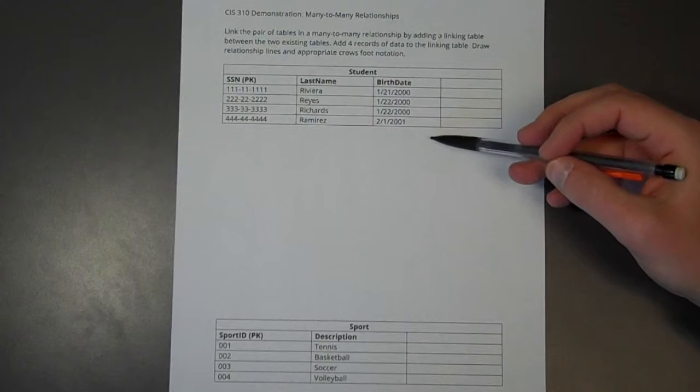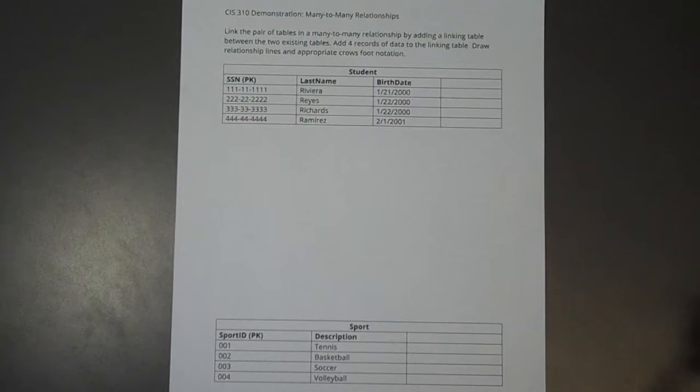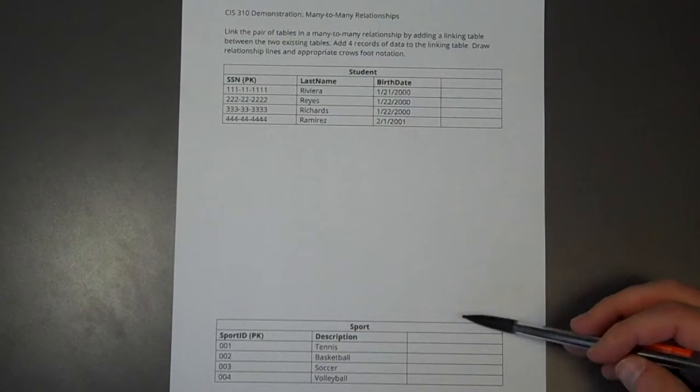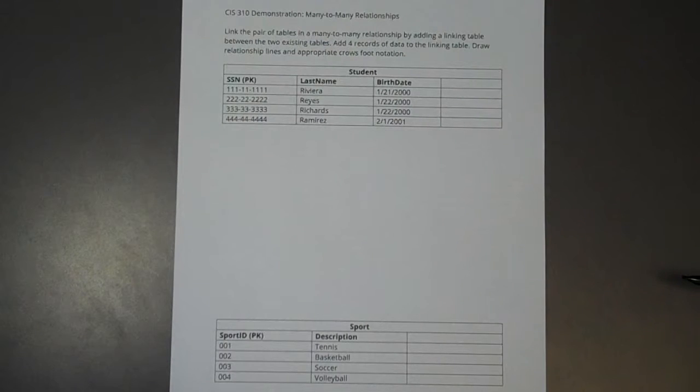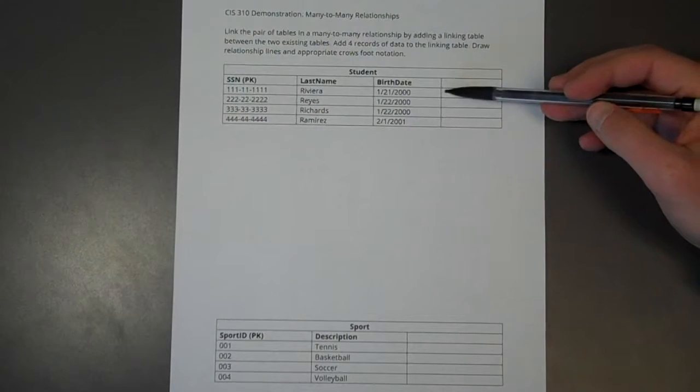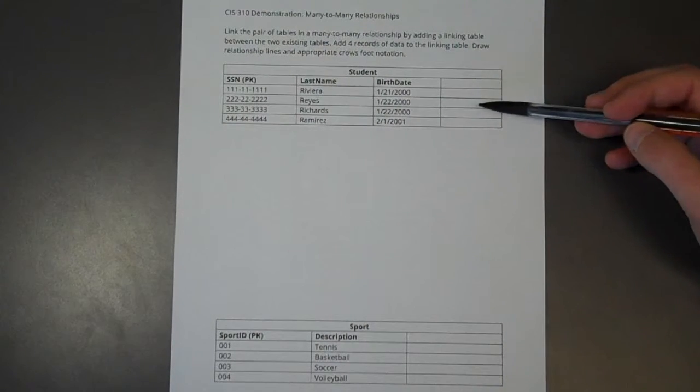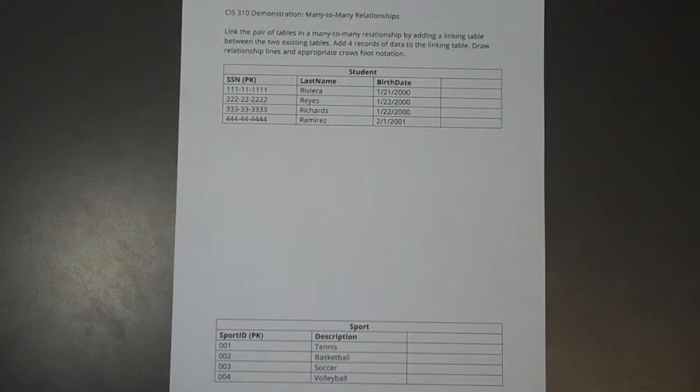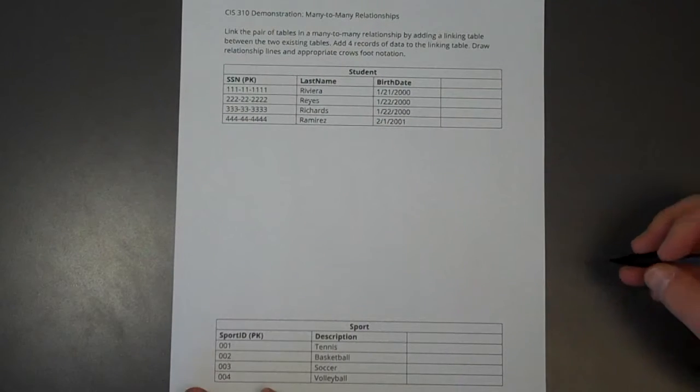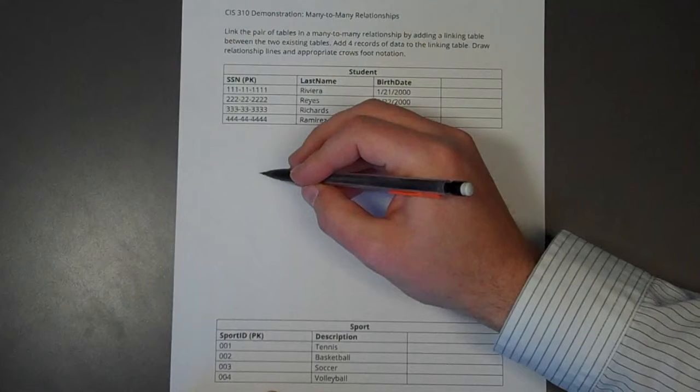And so we can't just draw a line between these two and put a crow's feet on each end and put a foreign key here and a foreign key here. That will not work. We would have to specify multi-values inside of each of these cells, and we cannot do that. That would violate our rules of database normalization. So let's create this linking table or this joining table between the two.